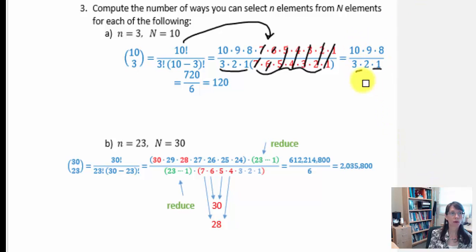Though even though none of those numbers look exactly the same, we may be able to do some reducing. Or you could simply say 10 times 9 times 8 makes 720. The denominator, 3 times 2 times 1 gives us 6. And you could take 720 and divide that by 6 to get 120.